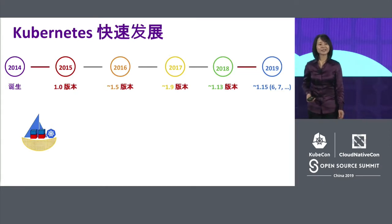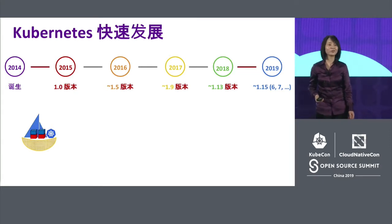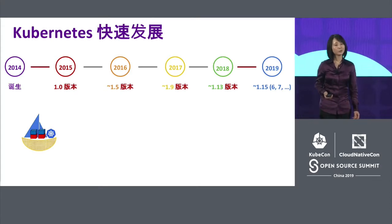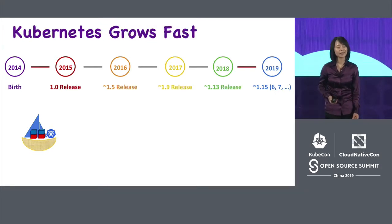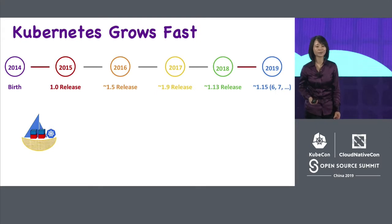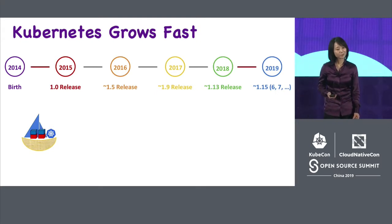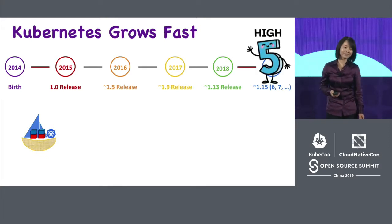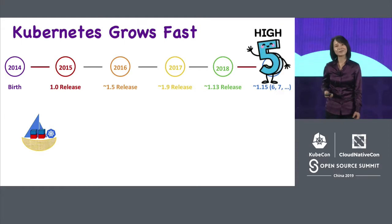To understand from SIG Architecture's point of view, let's go back in time to the very beginning of Kubernetes. In 2014, the first PR was submitted into the Kubernetes repo — Kubernetes was born. In 2015, we had the 1.0 release. Early this month, Kubernetes just passed five years old. Happy birthday, Kubernetes.